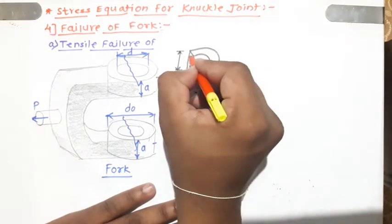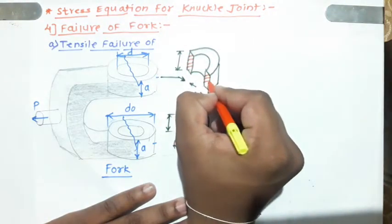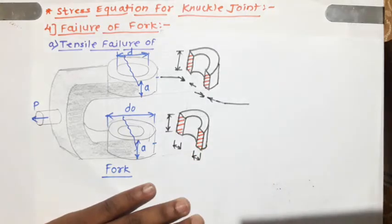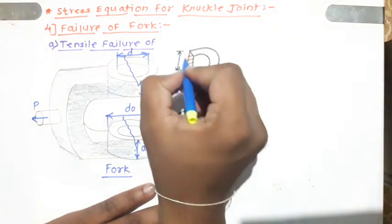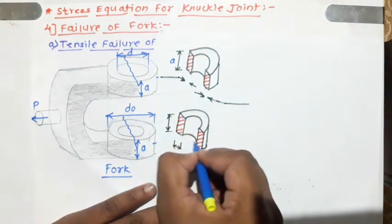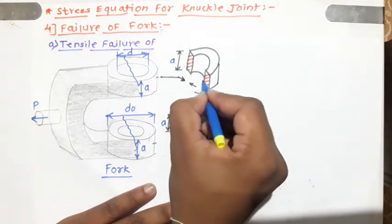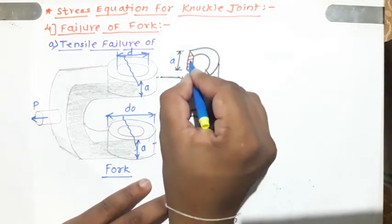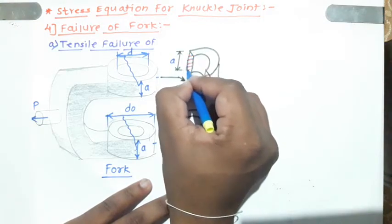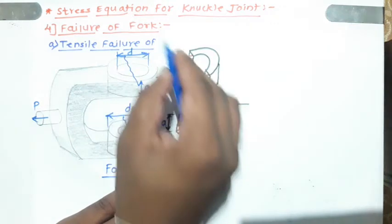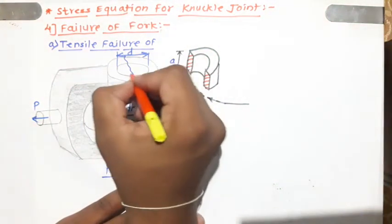After tensile failure, the half portion of the top end and the half portion of the bottom end of the fork get removed. The remaining area is subjected to tensile stress — one area for the top fork end and one for the bottom fork end. The height of these areas equals the thickness of the fork end, which is small 'a'. To find the rectangular area, we need both the height and the width.